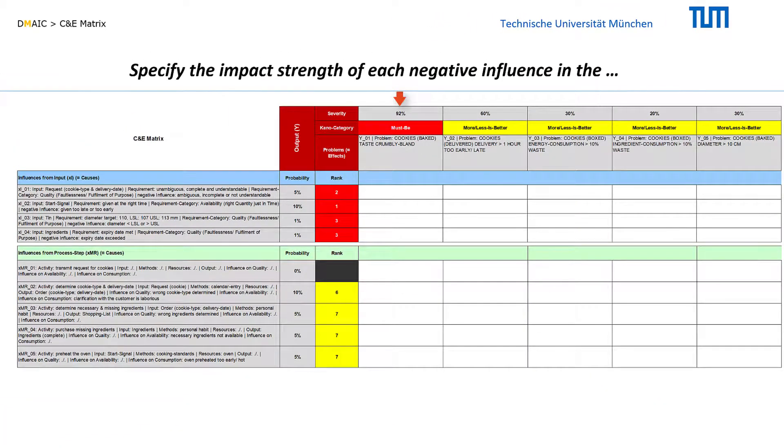SigmaGuide lists all defined problems in the columns of the matrix, together with the respective Kano category and the calculated severity. In its rows, the matrix lists the influences of the inputs and activities of the process, together with their respective frequency and ranking.